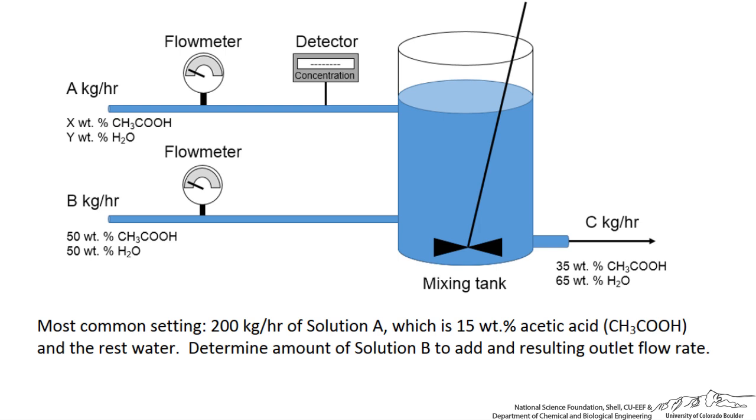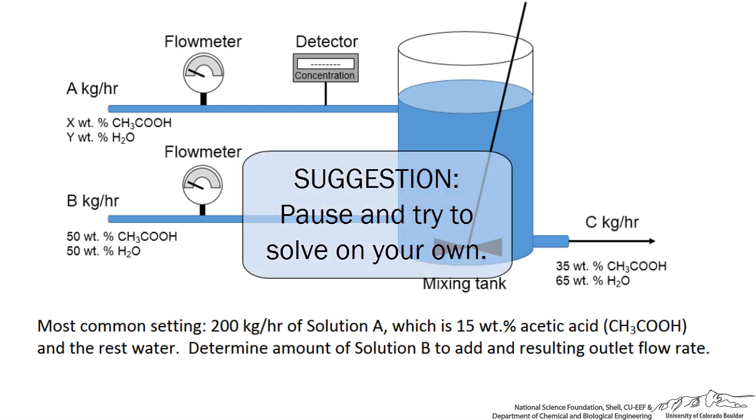We are going to start with the following problem. Let's look at the most common setting that this system might experience. We are given 200 kg per hour of solution A coming into the mixer. That solution is 15 weight percent acetic acid and the rest water. We want to determine the amount of solution B to add to get the resulting outlet flow rate.